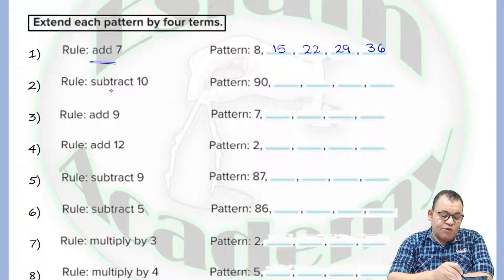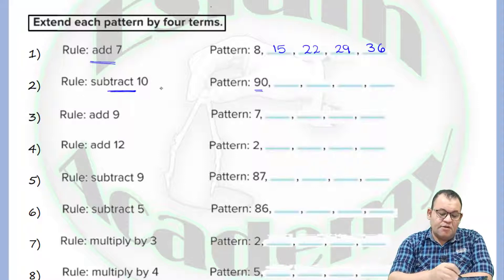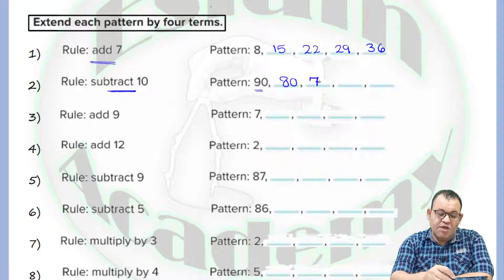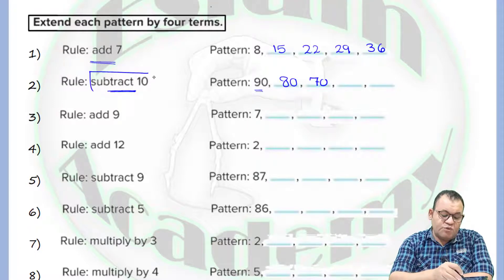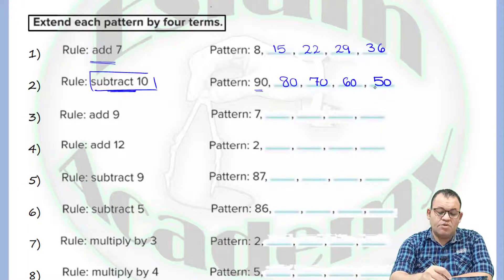Now the next pattern requires us to subtract 10. From each term that starts with 90, I need to subtract 10. By subtracting 10 it will be equal to 8. If I subtract 10 it will be equal to 7. So I will follow the given rule and in each time I will subtract. By subtracting 10 it will be equal to 60. By subtracting 10 it will be equal to 50.